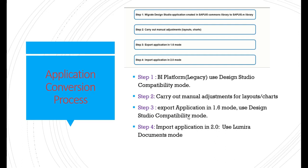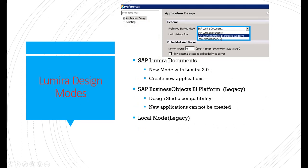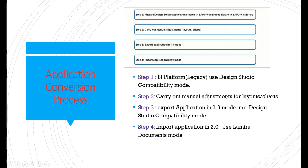To convert previous applications, first open them using BI Platform Legacy mode. Then carry out manual adjustments for layout and charts, since opening previous applications in legacy mode may cause charts and layouts to appear disturbed. Next, export the application in Design Studio 1.6 mode using the design studio compatibility mode, then import the application in Lumira 2.0 using Lumira Documents mode, and it will be automatically converted.